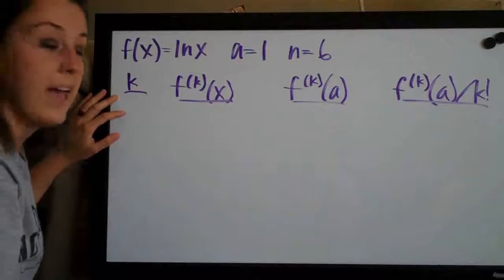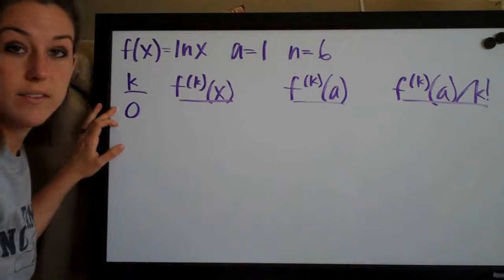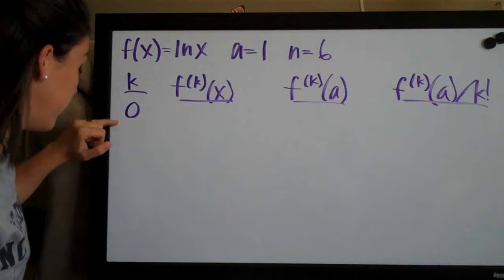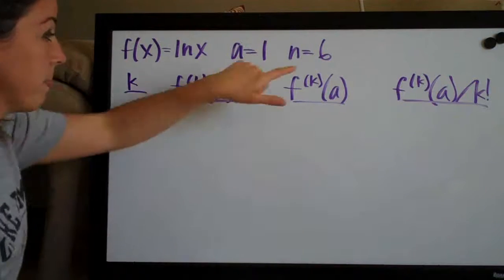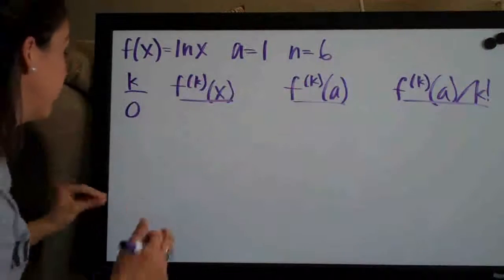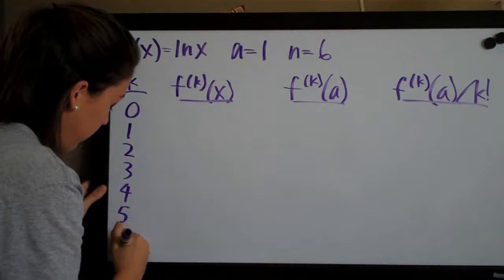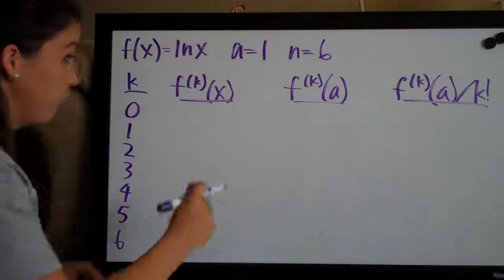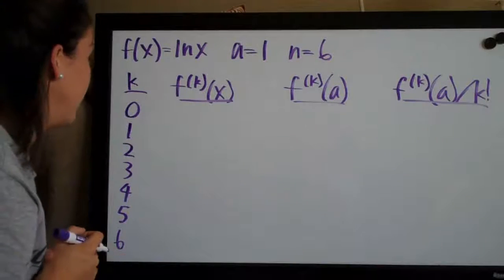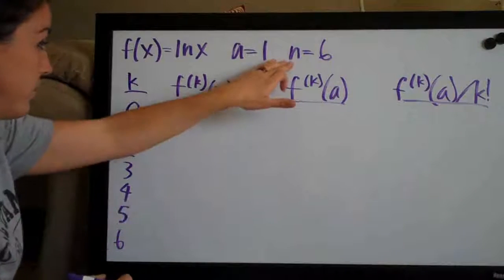So the first column k always starts with zero. We always write zero to be our first row in our first column k and then we proceed to number down this column until we get to whatever n is equal to, in this case 6. So we proceed 1, 2, 3, 4, 5, 6 like that. So if n had equaled 3, we could have stopped at 3. In this case we need to go all the way to 6. So that's the first thing we're going to do. Always start with zero, number down until you get to n.